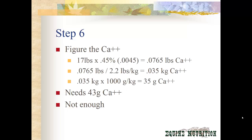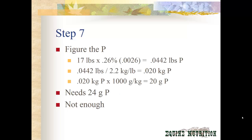Next we figure calcium and phosphorus. Calcium: 17 pounds times 0.45% gives us 0.0765 pounds of calcium. Working through the math to get to grams, that gives us 35 grams of calcium — and he needs 43, so he's still not getting enough. For phosphorus: 17 pounds times 0.26% gives us 0.0442 pounds of phosphorus; work through the math again and that gives us 20 grams of phosphorus — and he needs 24, so he's not quite getting enough of that either.